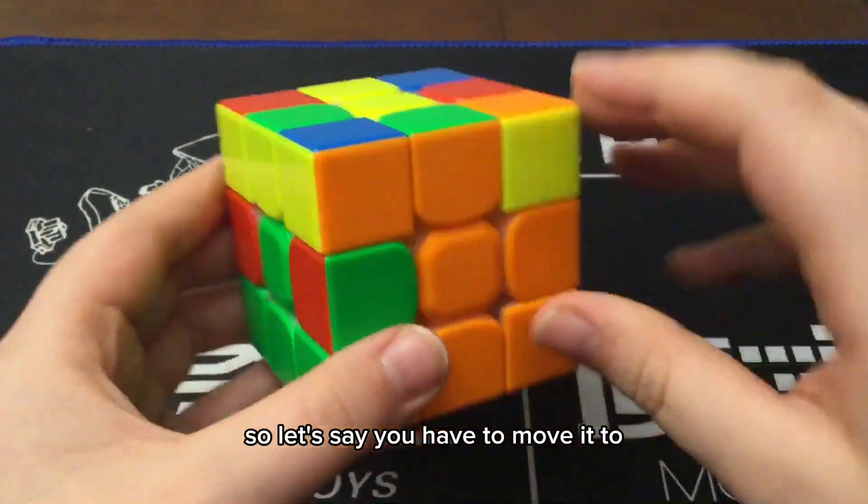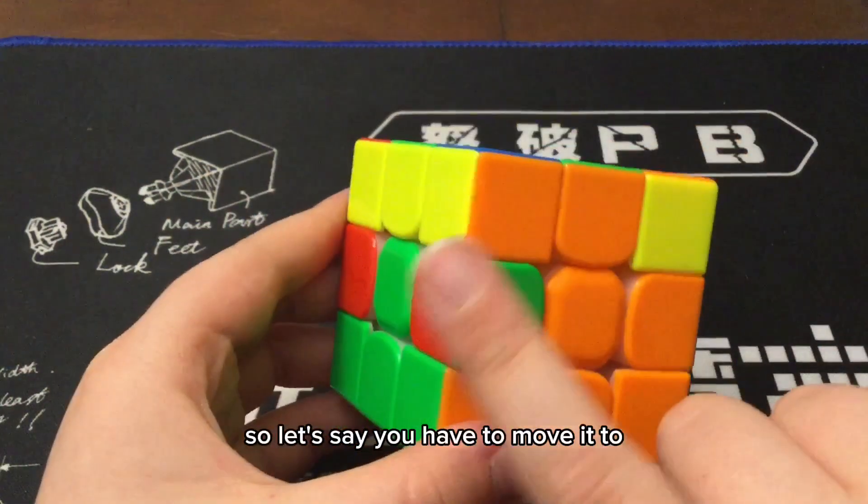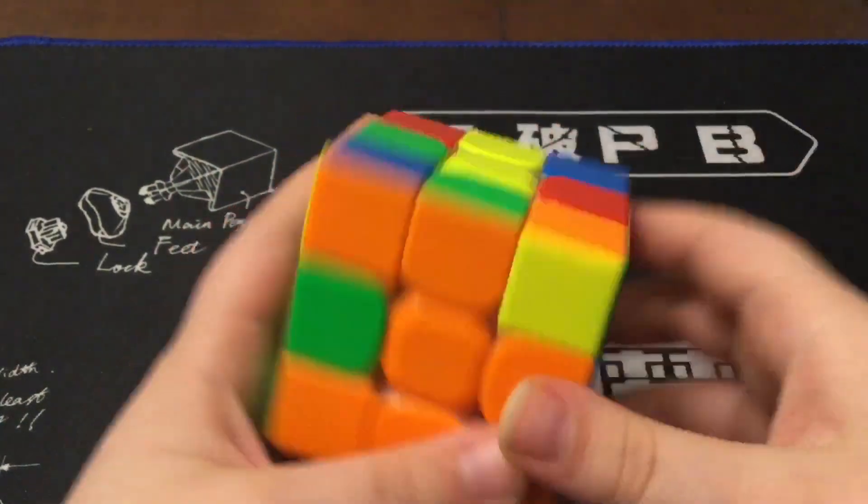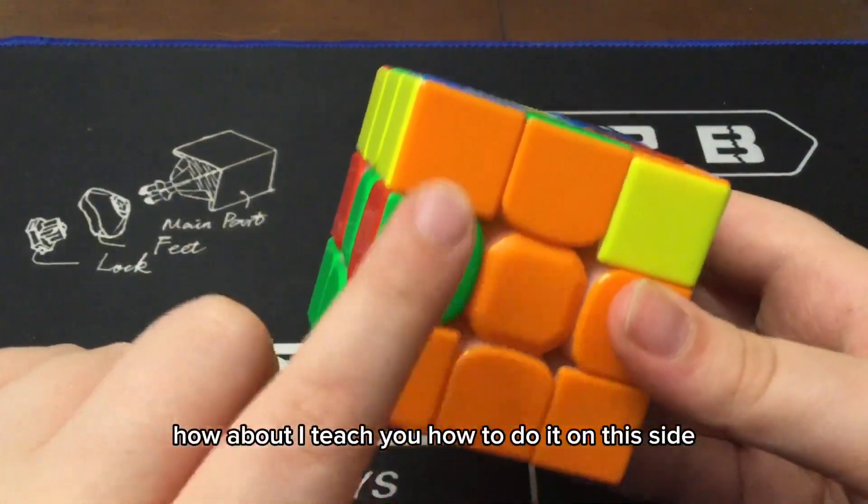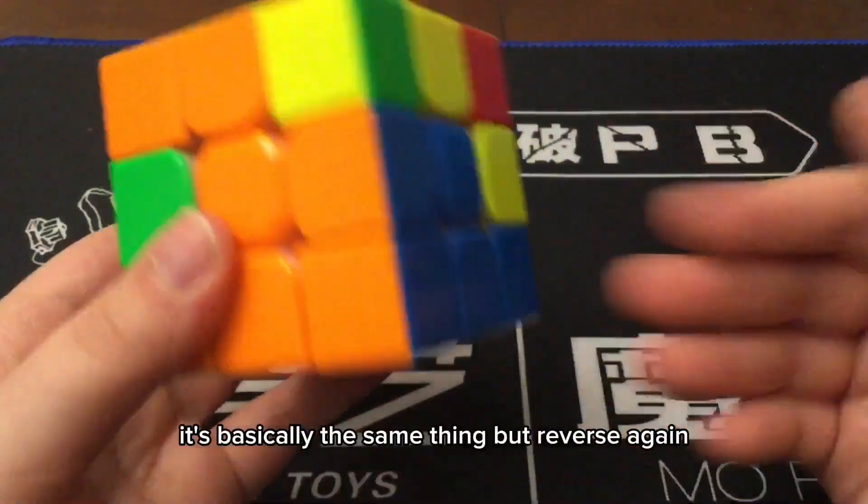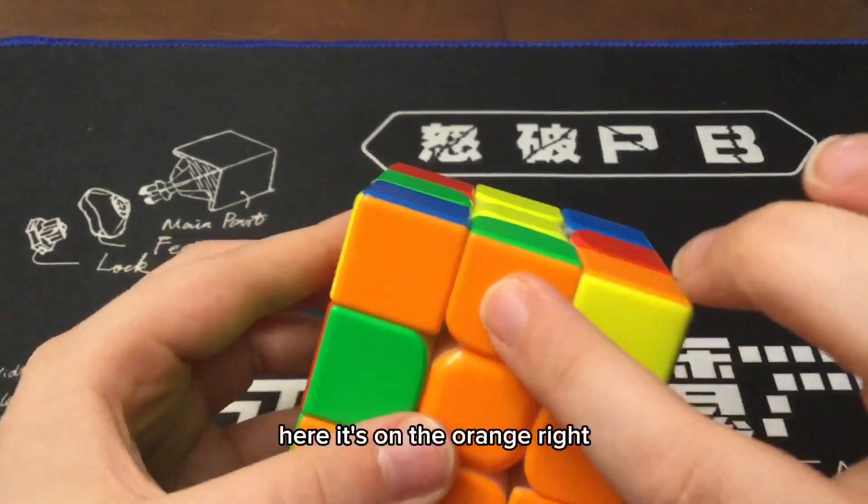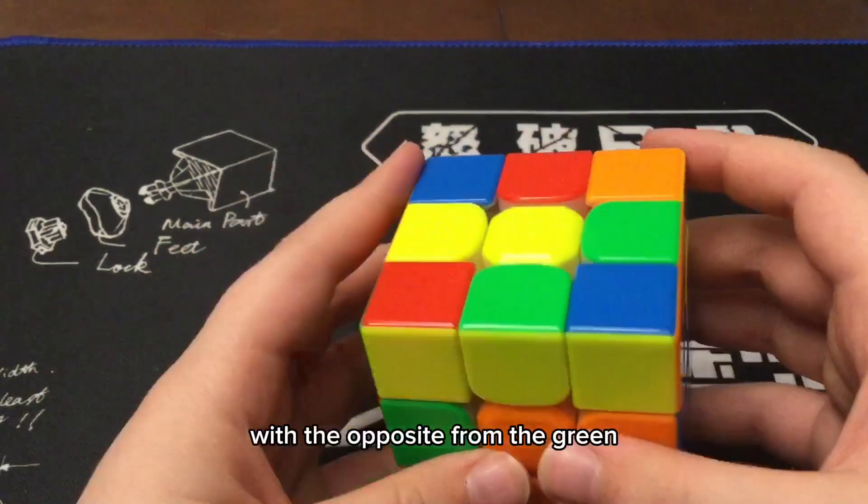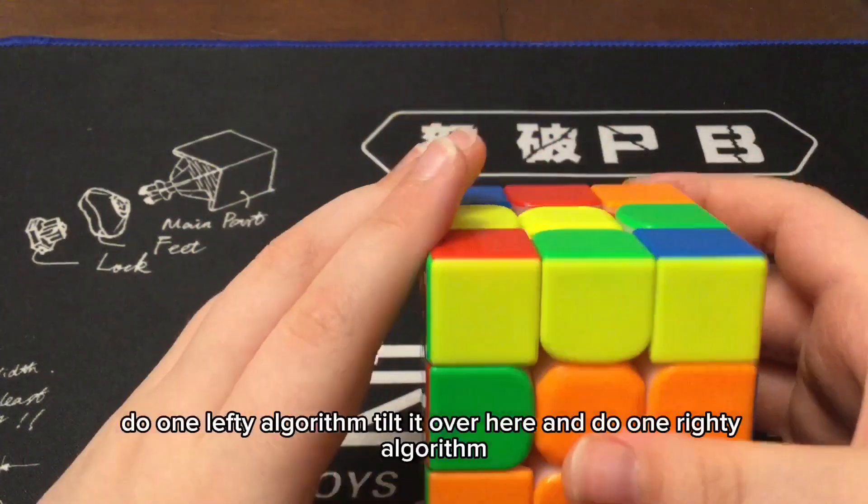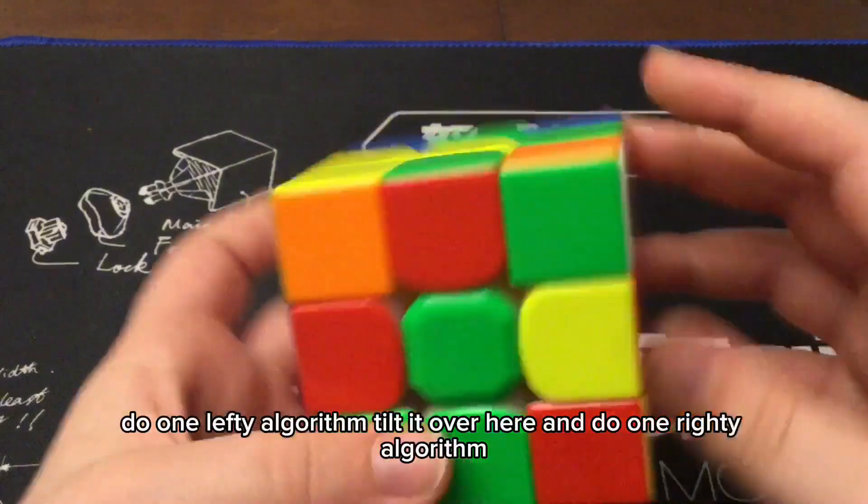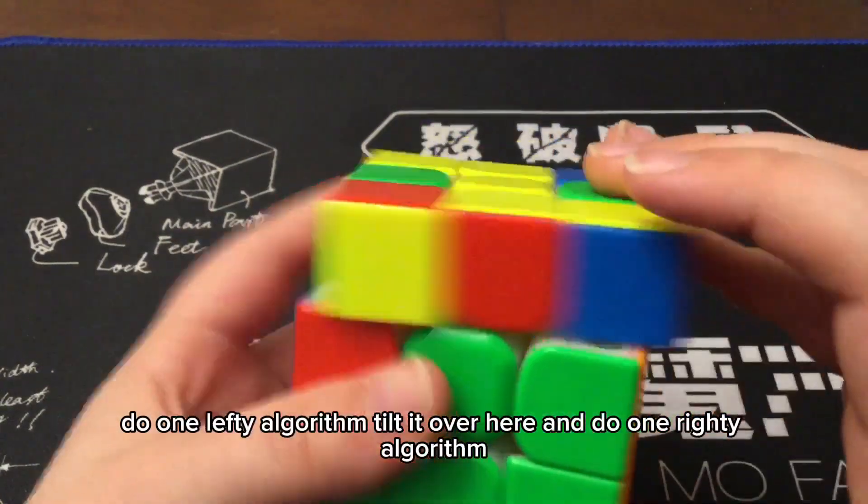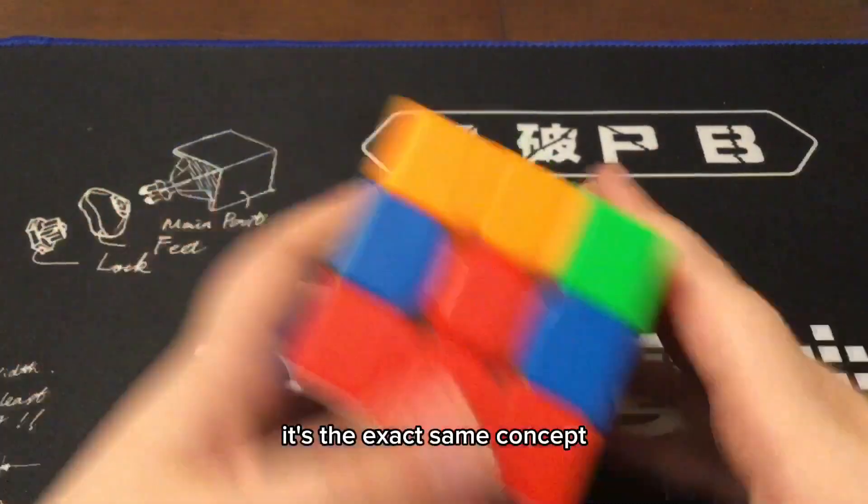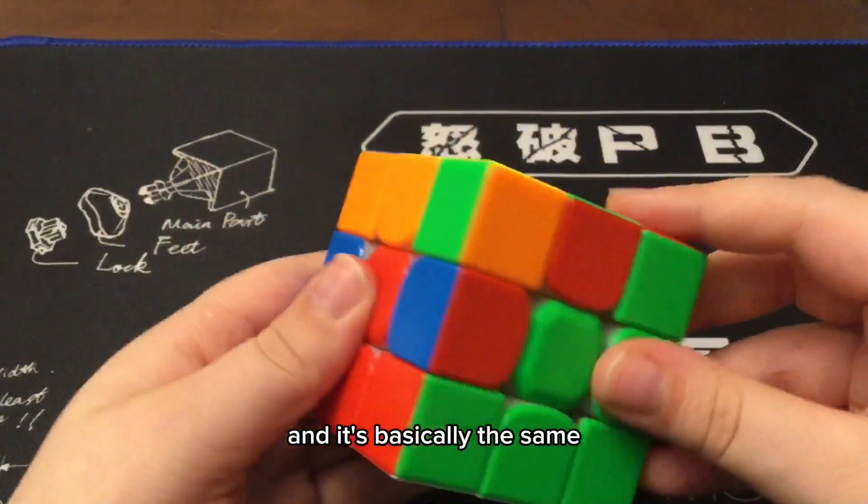So, let's say you have to move it to the other side. I already taught you how to do it on this side. How about I teach you how to do it on this side? It's basically the same thing, but reverse. Again, here, it's on the orange, right? Move the opposite from the green, do one lefty algorithm, tilt it over here, and do one righty algorithm. It's the exact same concept.